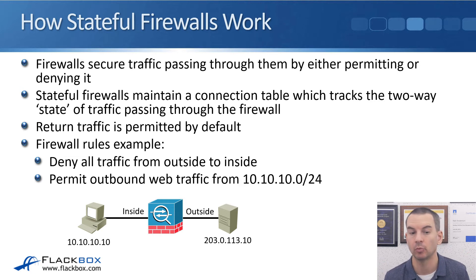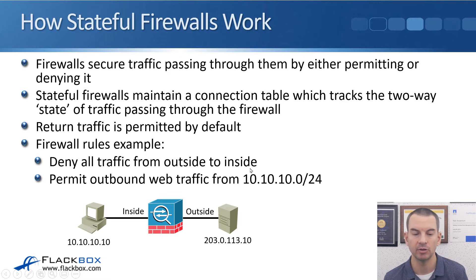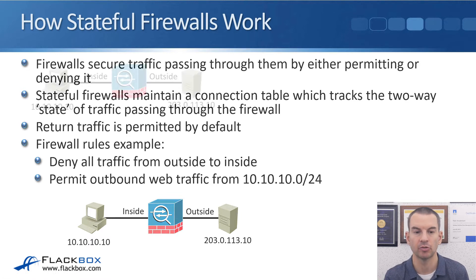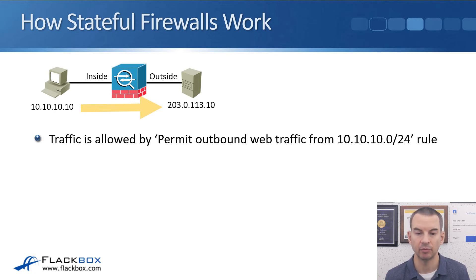Here's an example of some firewall rules. We've got a firewall with our inside network — hosts on the 10.10.10.0/24 network — and the outside connected to the internet with a web server at 203.0.113.10. The firewall rules deny all traffic from the outside to the inside for security, and permit outbound web traffic from the 10.10.10.0/24 network. Our inside host 10.10.10.10 sends web traffic to the external server and it's allowed by that rule.